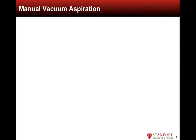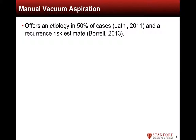Manual vacuum aspiration, or MVA, followed by chromosome analysis of miscarriage tissue is a valuable tool for understanding the cause of a miscarriage. In up to 50% of cases, an etiology for the miscarriage can be identified from chromosome analysis, offering patients a concrete explanation for the pregnancy loss and can also offer an estimate of the risk of recurrence.